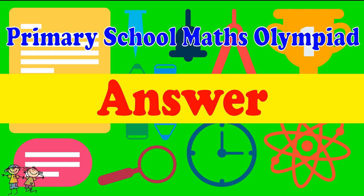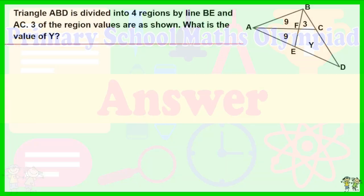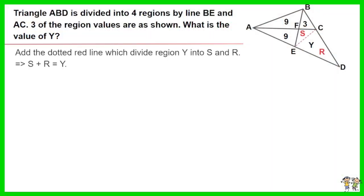Here is the recommended answer. Add the dotted red line, which divides region Y into S and R. S plus R equals Y.